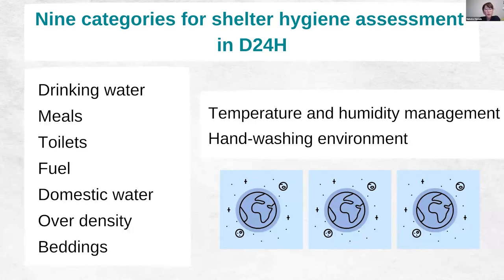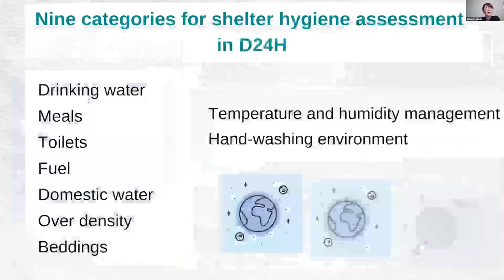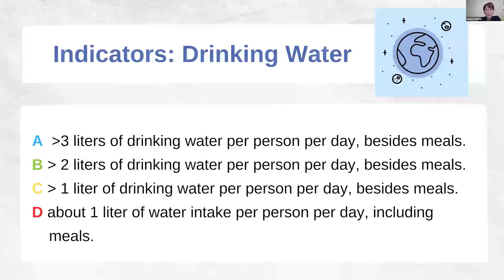There are nine items: drinking water, meals, toilets, fuel, domestic water, overcrowding, bedding, temperature and humidity management, and hand washing environment. Each item is rated on an ABCD scale, with A being the most desirable condition and D being the least desirable. For drinking water, A means there's more than three litres of drinking water per person per day besides meals; B means more than two litres; C means more than one litre; and D means there's about one litre of water intake per person per day, including meals.